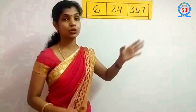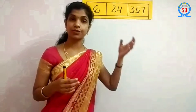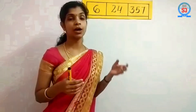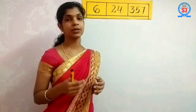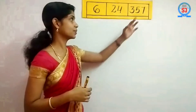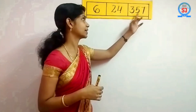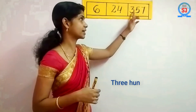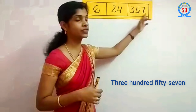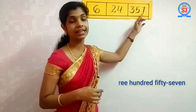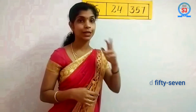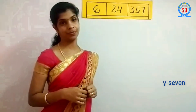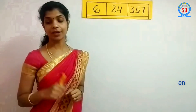We used to read ten and one together — like fifty-seven, forty-two, ninety-nine, ninety-six hundred. So with one, ten, hundred, we will read three hundred fifty-seven. Ten and one we read together. Now I will show you a place value chart.